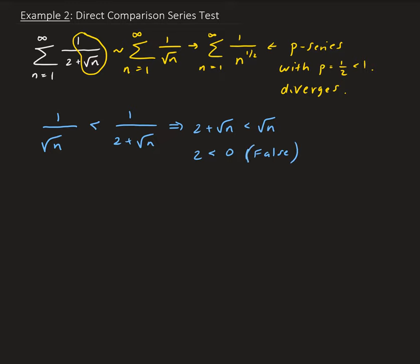So when this happens, we need to go back to the original series we chose and try to pick another one. Let's try the summation of 1 over n. Now, 1 over n sort of resembles 1 over root n, and we also know that this is a harmonic series, and this harmonic series is going to diverge. This is harmonic, and we know it diverges.